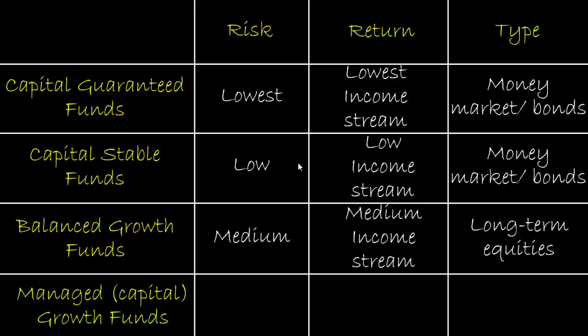The highest level of risk is the managed growth fund, also called the capital growth fund. The level of risk is very high, and consequently we expect a high level of return. The investment is mainly equities — the majority of the portfolio is devoted to equities, either domestic or international. These shares do not necessarily pay periodic dividends, because companies retain their profits within the firm to grow, expand, and generate higher growth.